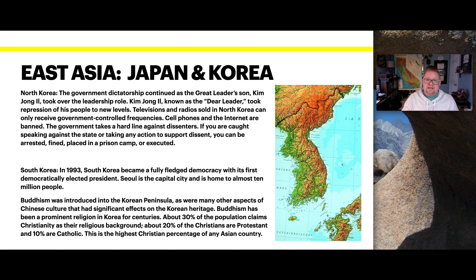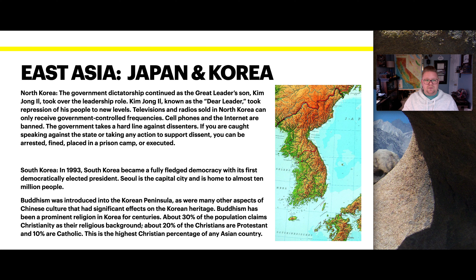North Korea's government is a dictatorship, continued as the great leader's son, Kim Jong-un, took over leadership. Known as the dear leader, Kim Jong-un took repression of his people to new levels. Television and radio sold in North Korea can only receive government-controlled frequencies, and cell phones and the internet are completely banned. The government takes a hard line against dissenters — if you're caught speaking against the state or supporting dissent, you can be arrested, fined, placed into a prison camp, or ultimately executed. We've continued to see strife and communication frustrations with North Korea under Kim Jong-un, the most recent leader.